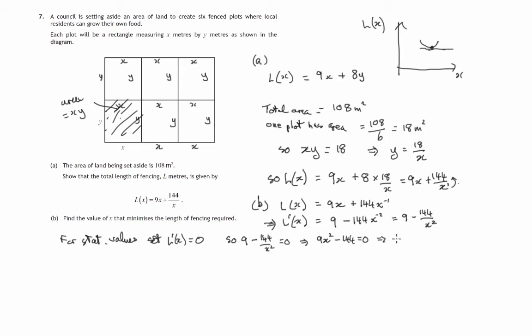Therefore 9x squared is 144, so x squared will be 144 over 9. And therefore x is the square root of 144 over 9. So it's 12 over 3, which is 4.